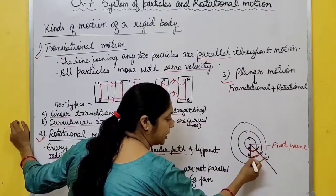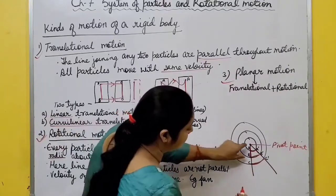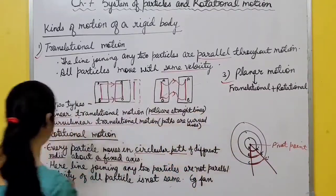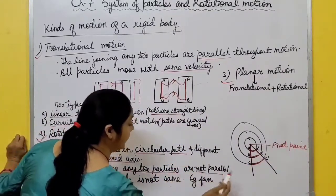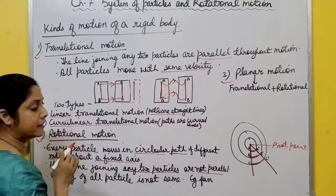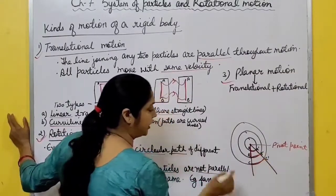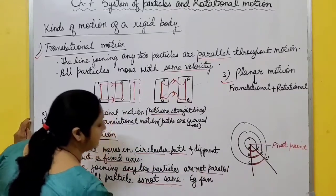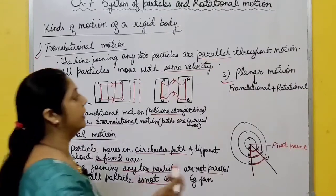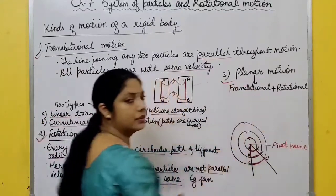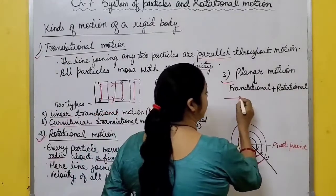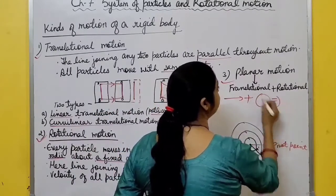In rotational motion, the line joining any two particles is not parallel to each other. Also, in translational motion velocity of all particles is the same, but here velocity of particles is different - example is a fan. Third type is planar motion, which is simply a combination of translational and rotational motion.